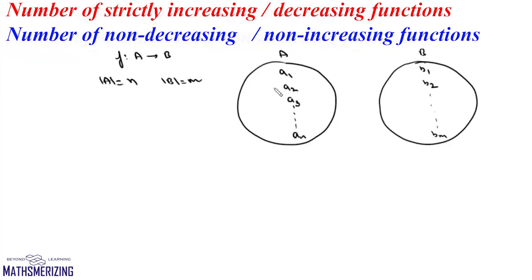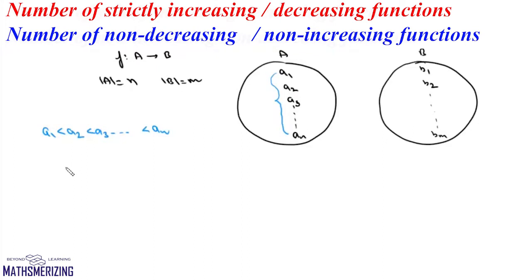Now we need to find the number of strictly increasing functions defined from A to B. In order to define strictly increasing functions, the elements in set A must be arranged in some order. So we assume A1 < A2 < A3 < ... < AN. By doing so we have not changed the question — we have just rearranged the elements. The question asks for functions where F(Ai) < F(Aj) whenever i < j.